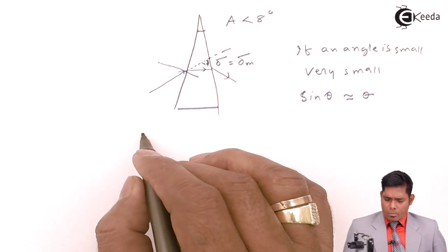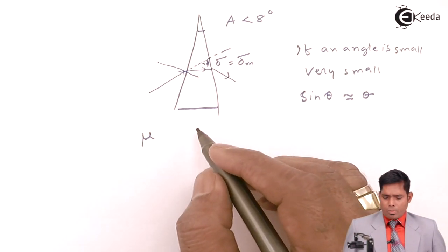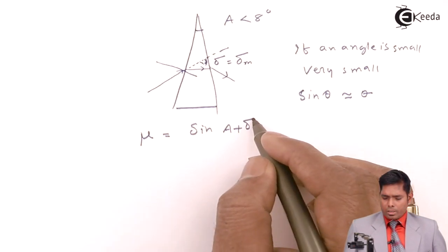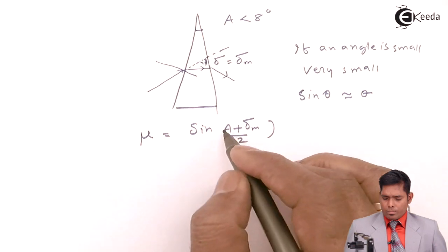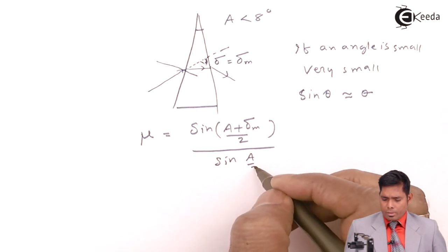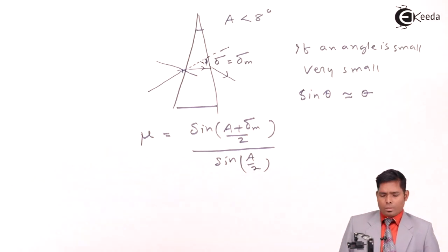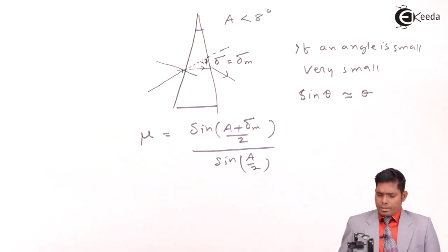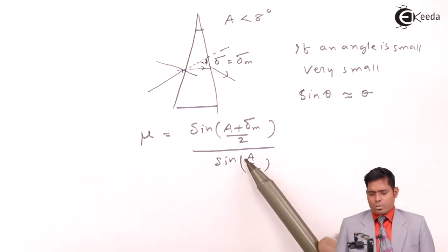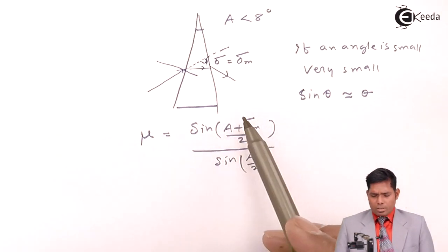So for a normal prism, thick prism or fat prism, this mu comes out to be sine of (A plus delta m) divided by 2, divided by sine of A by 2. So you imagine that this is the angle which is theta, this is the angle theta or beta, but this is A.